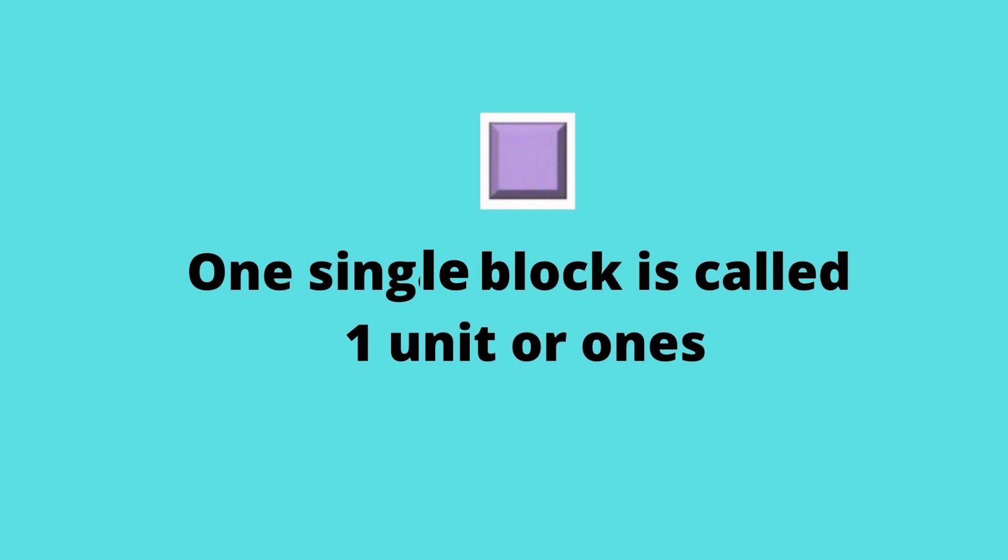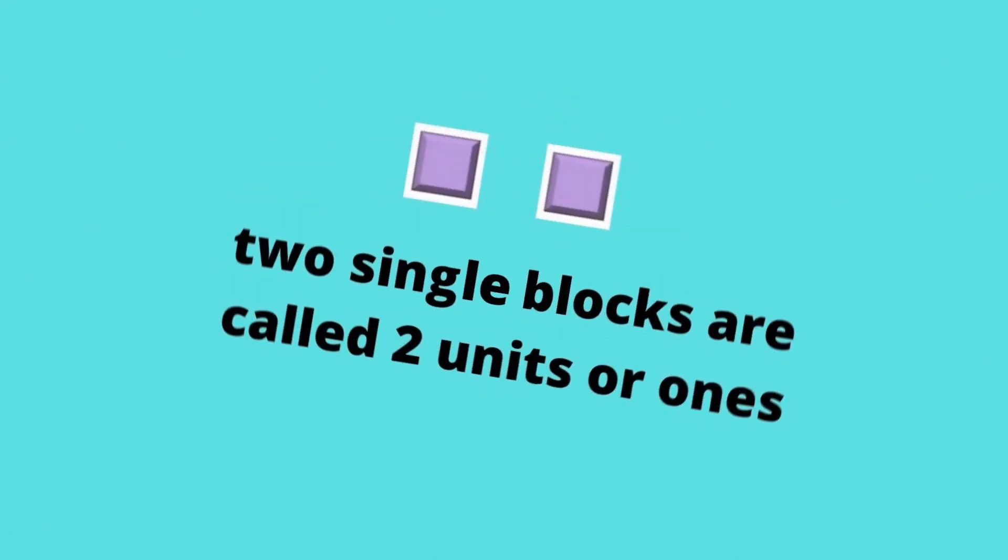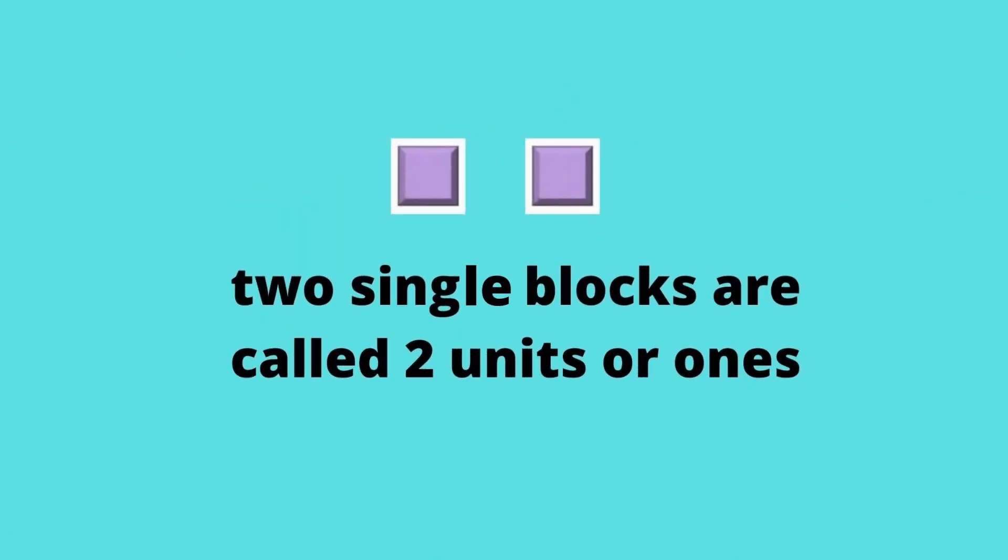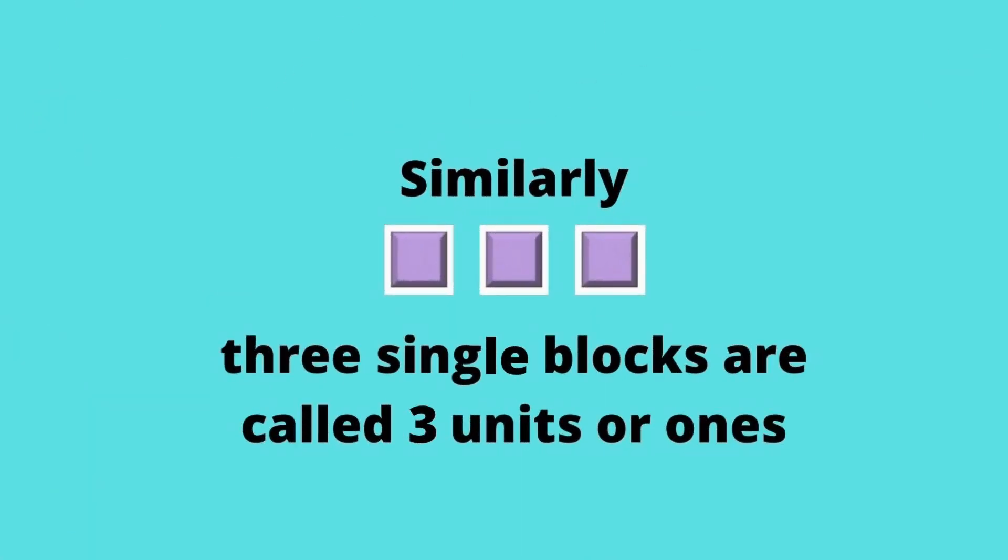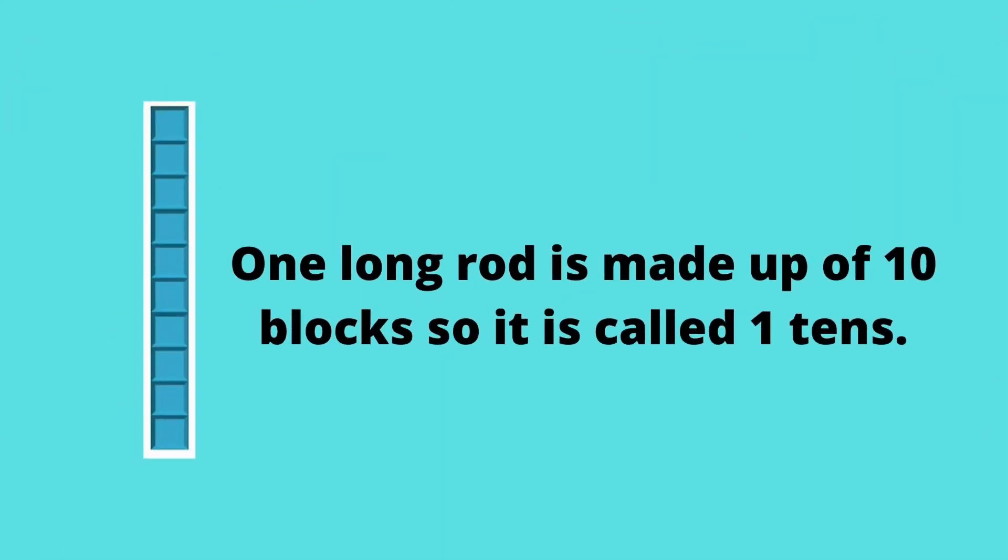Similarly, two single blocks are called two units or ones. In the same way, three single blocks are called three units or ones. One long rod is made up of ten single blocks, so it is called one ten.